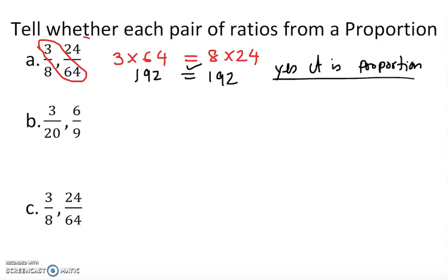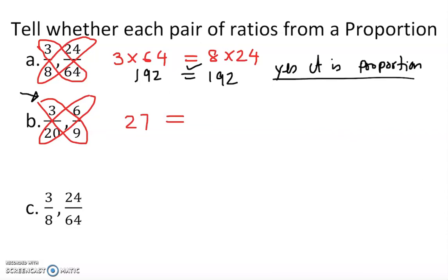Now the next one. Again, the best approach is to cross multiply and see if they are equal. We do the first numerator first: 3 times 9 equals 27, and 6 times 20 equals 120. These are easy to calculate, and I can clearly see they are not equal — so this is not a proportion.